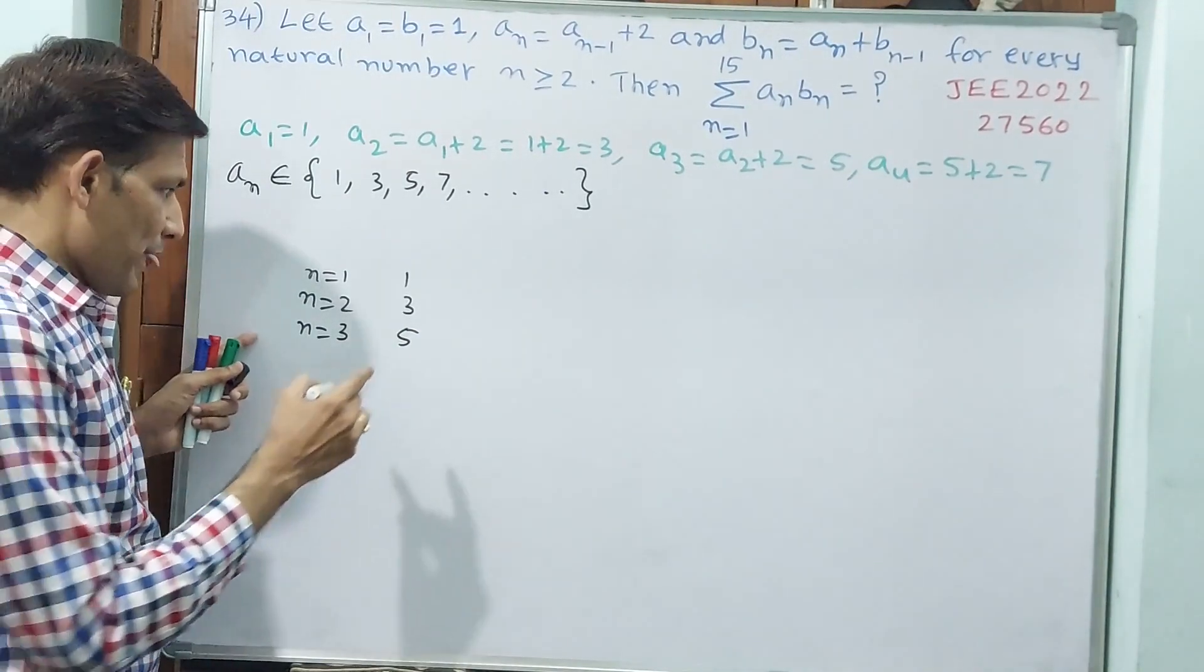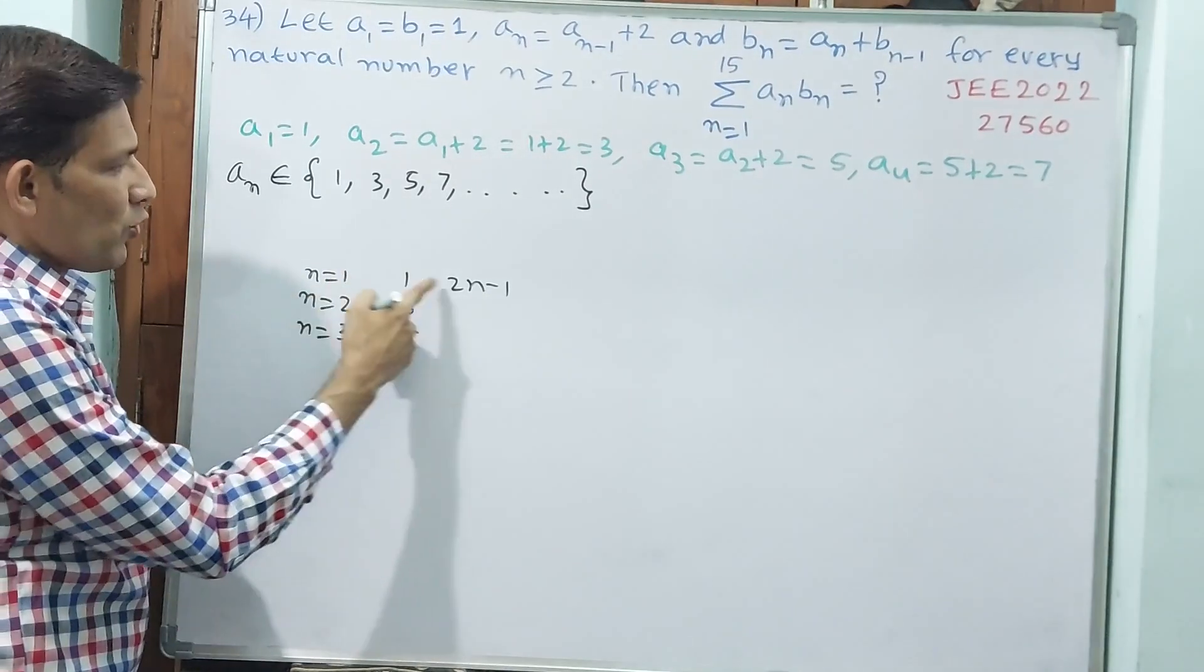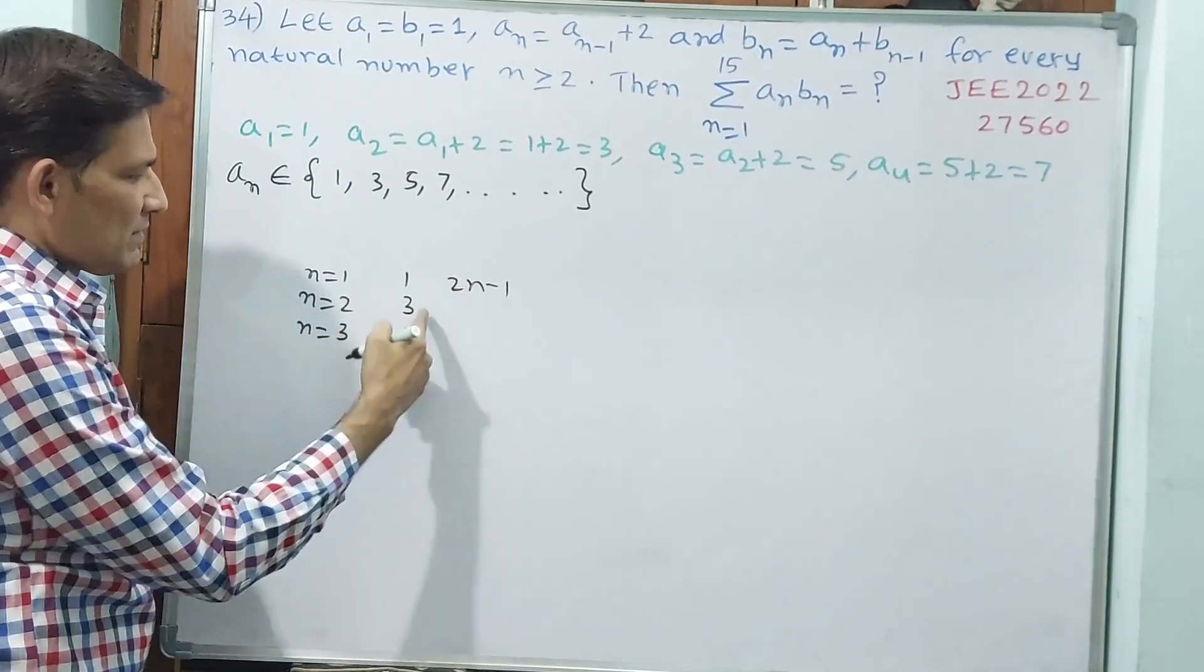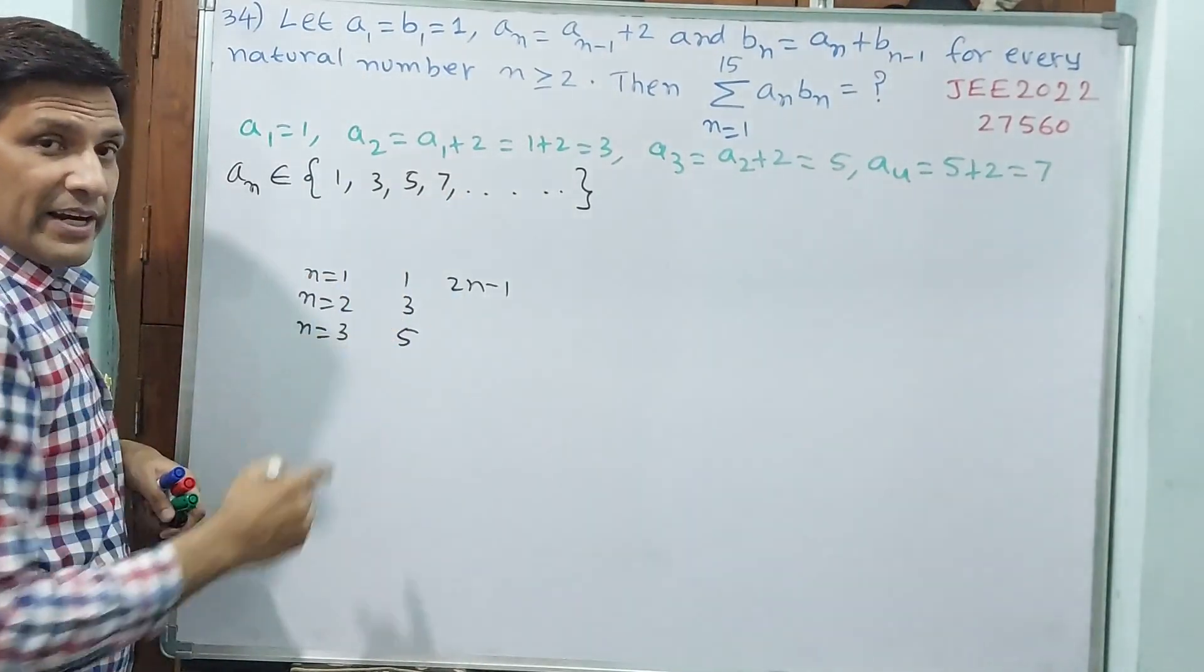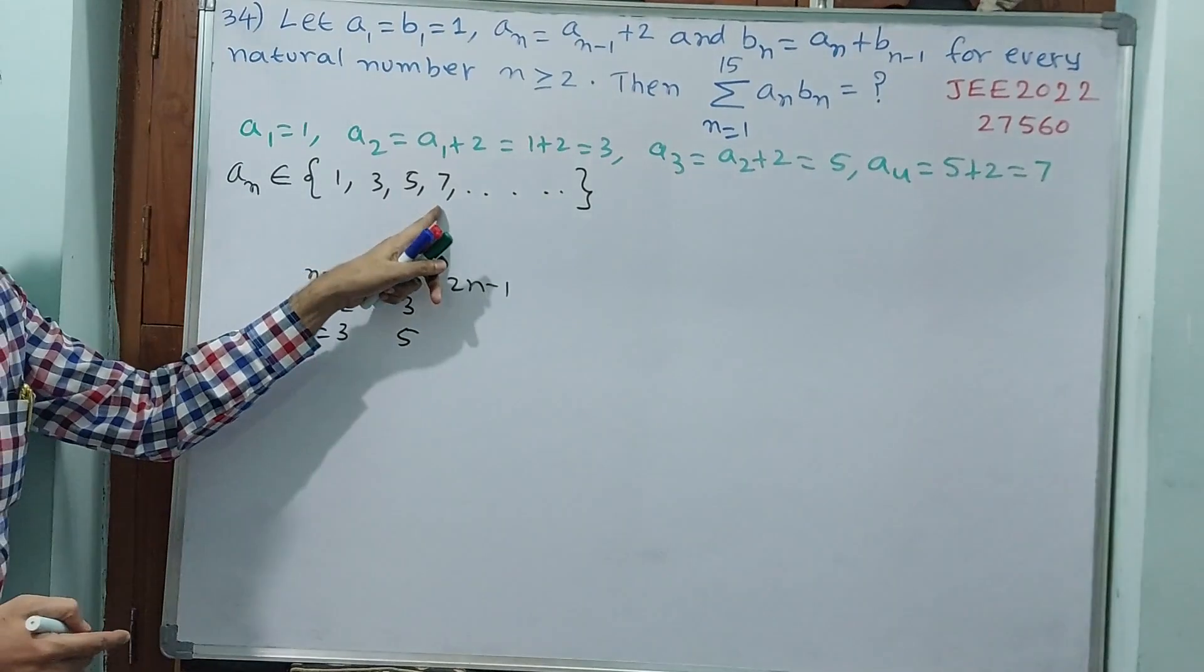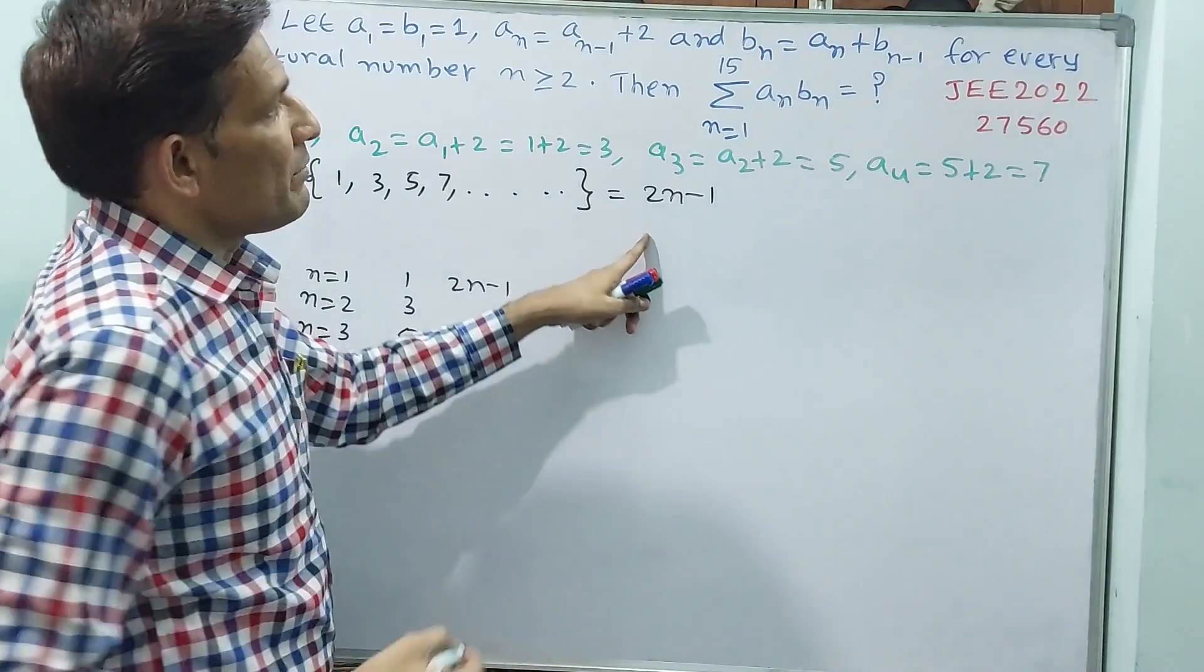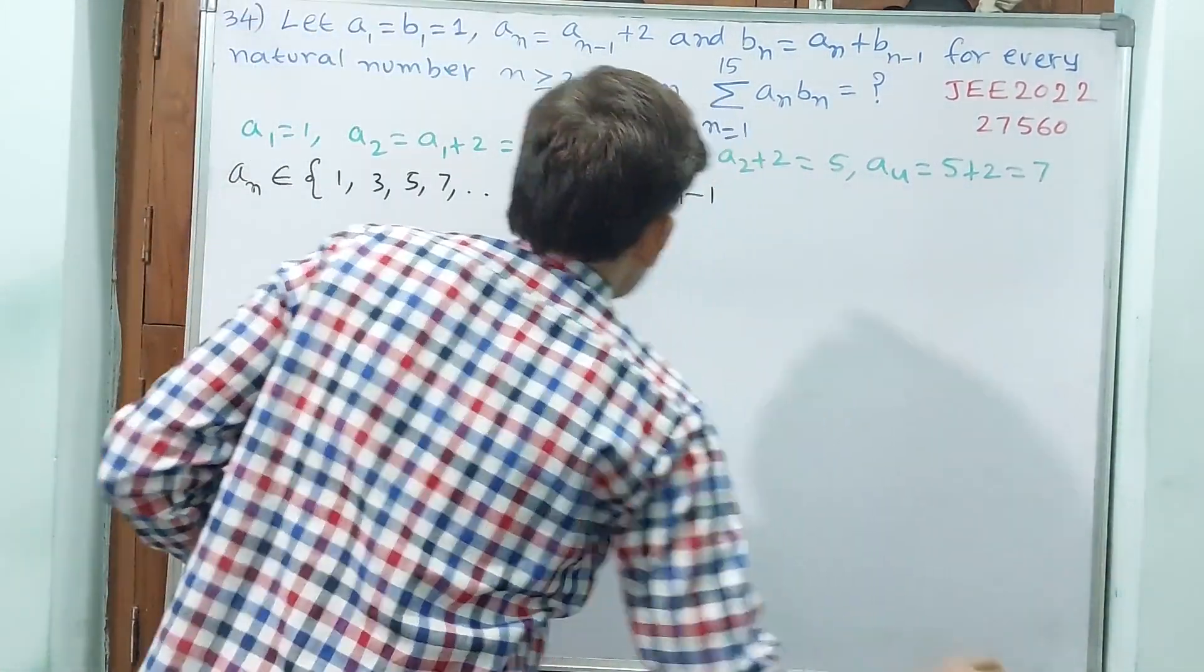See, what I can write, 2n minus 1. Shall I write, 2 into 1, 2 minus 1 is 1. 2 into 2, 4 minus 1 is 3. 2 into 3, 6 minus 1 is 5. Shall I write, 2 into 4, 8 minus 1 is 7. That means see, this is equal to 2n minus 1. This is very important because here you have to change.